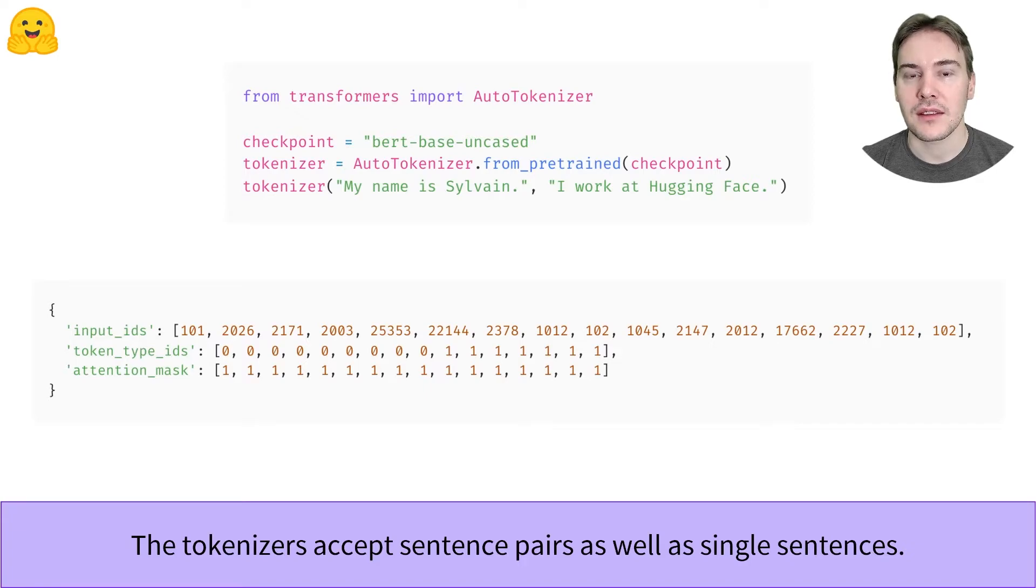On top of the input IDs and the attention mask we studied already, it returns a new field called token type IDs, which tells the model which tokens belong to the first sentence and which ones belong to the second sentence.